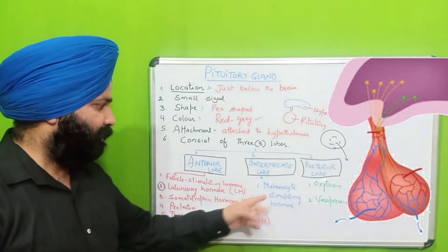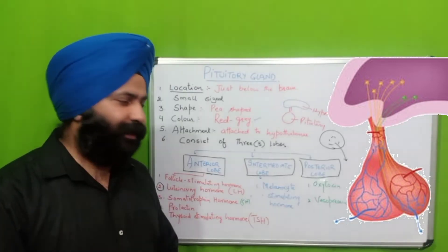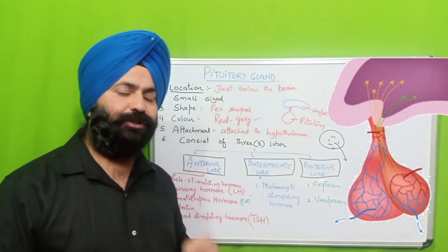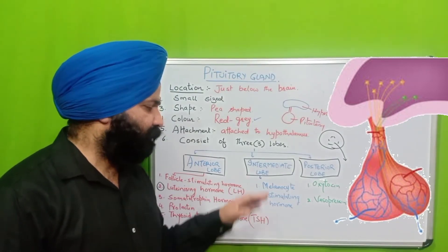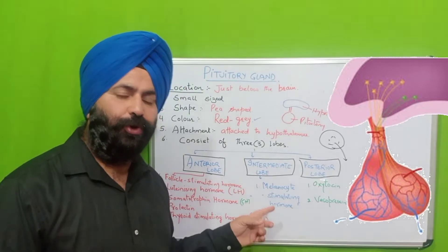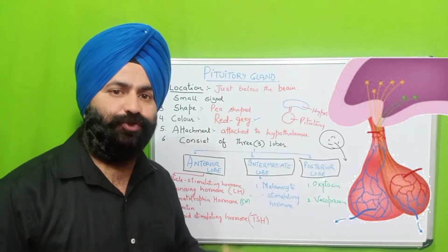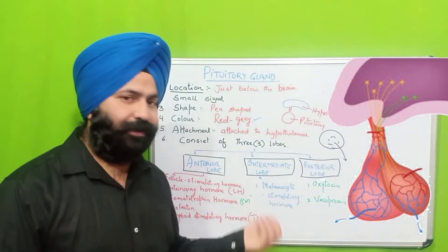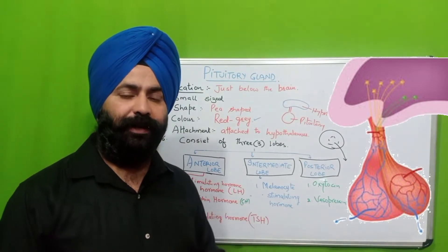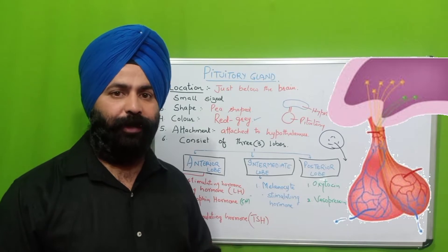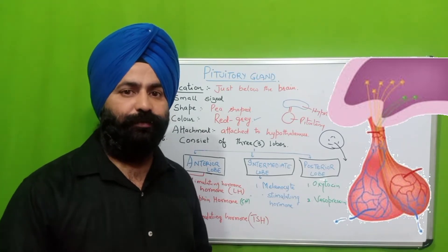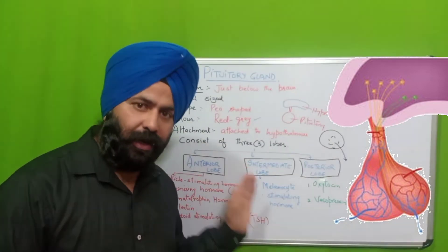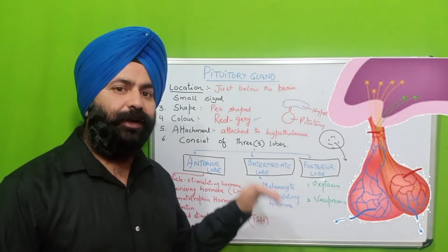Now we will talk about the Melanocyte Stimulating Hormone. The next lobe is the intermediate lobe — intermediate means between the two lobes. The intermediate lobe secretes the Melanocyte Stimulating Hormone. Melanin is a chemical pigment that gives our body and skin its black or dark colour.